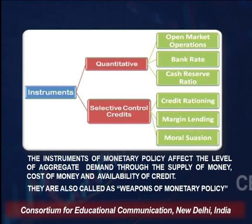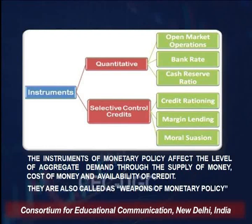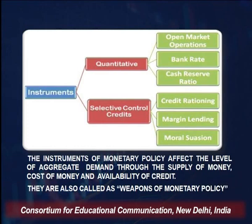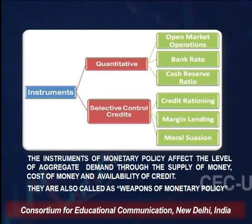Selective credit control methods are different — the total money supply may not change and may remain the same, but the proportion or allocation of funds across different sectors is changed. The main instruments under selective credit control are credit rationing, margin requirements, and moral suasion. These instruments affect the level of aggregate demand through changing the supply of money, cost of money, and availability of credit in the economy.